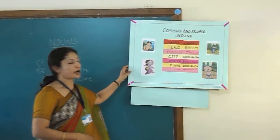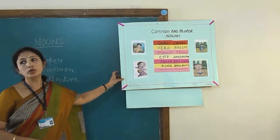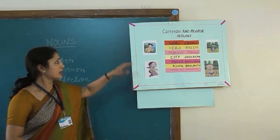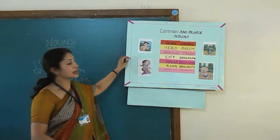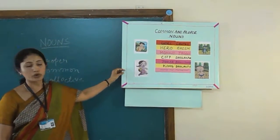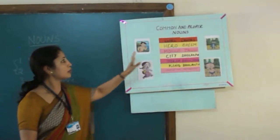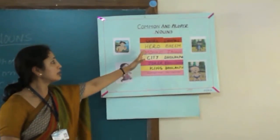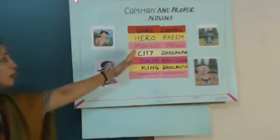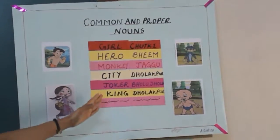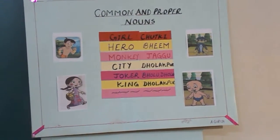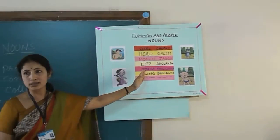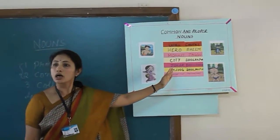Now in this activity, I have taken cartoon characters because they are familiar to everyone. I have taken the Chota Bean cartoon, which all of you know. I have made two columns. One column has words like girl, hero, monkey, city, joker, king — these are common for everyone, so we can categorize this row as the common noun.